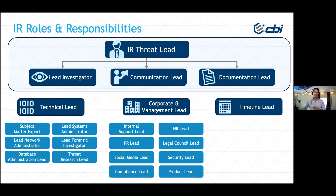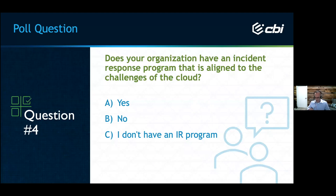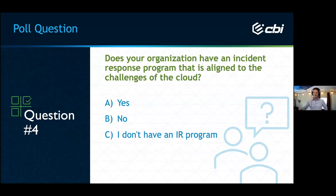Building a RACI chart for an incident enables quick, direct communication among the team and clearly defines leadership responsibilities across the different stages of an event. I think developing a RACI for each incident is almost a necessity — and a great actionable recommendation for today's attendees. Maybe start with what I think is the most viable attack vector: ransomware. Imagine developing an IR RACI that identifies who's responsible, accountable, consulted, and informed for those situations.